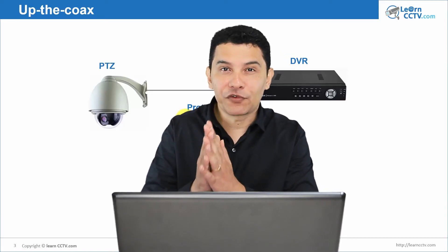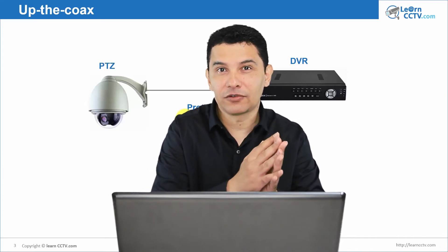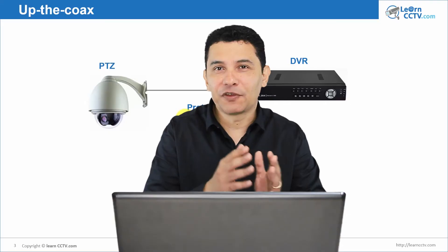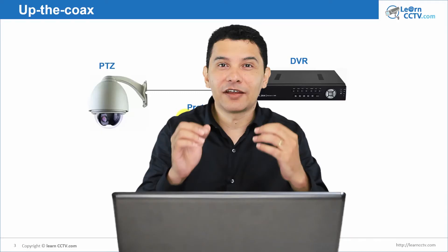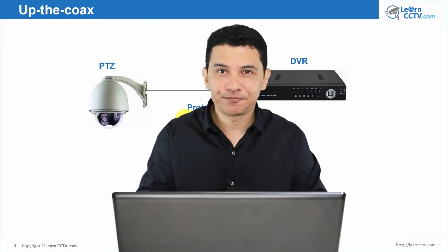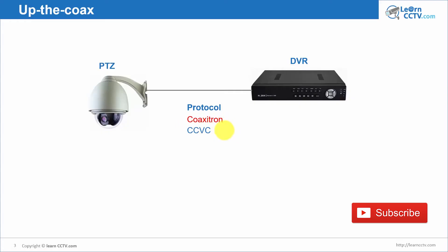You can go to the camera and configure it to use Coaxitron, and you can also configure your DVR to use Coaxitron. If they are from different manufacturers with different protocols, Coaxitron can be the common protocol that works between them. You can also find different protocols like CCVC from Samsung, and other protocols that work with coaxial commands. Remember: you need to have the same protocol on both the camera and the DVR.